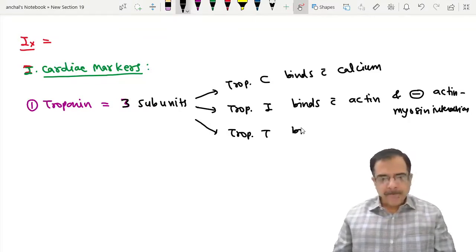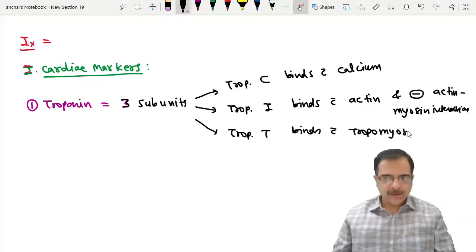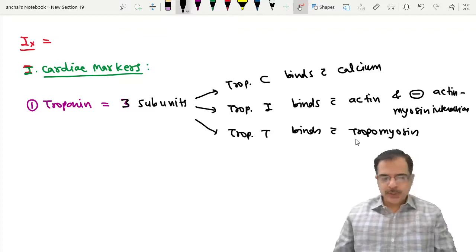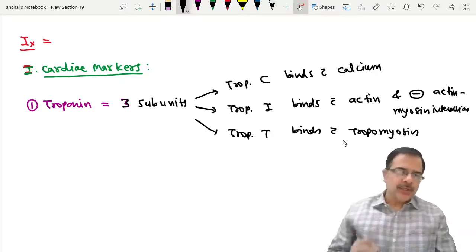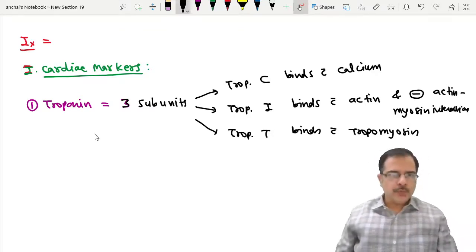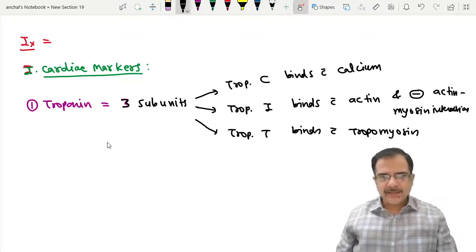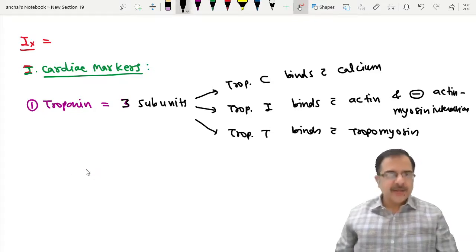Troponin T binds with tropomyosin, hence the name T. These troponins are first released from the myofilaments, they enter the cytoplasm, from the cytoplasm they leak into the lymphatic, and from lymphatic into the veins.